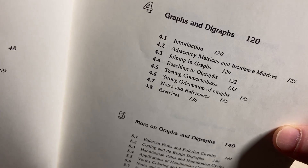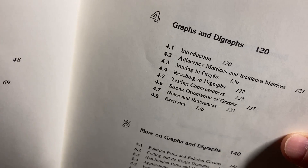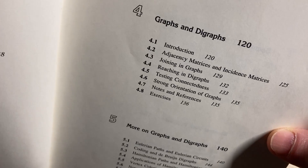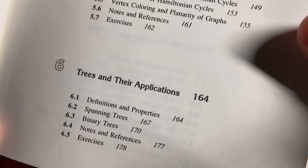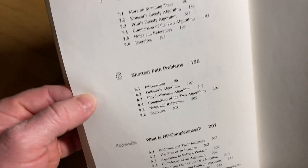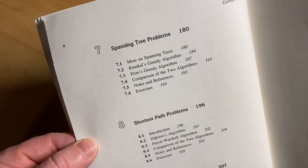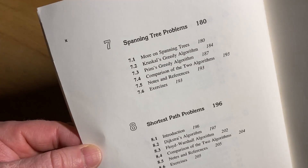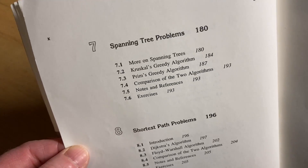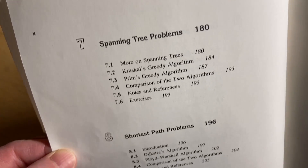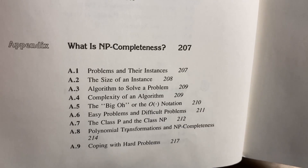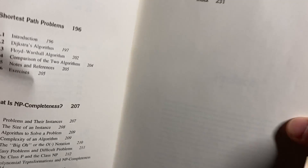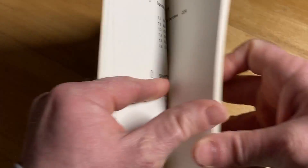You also get some graph theory: graphs and digraphs, and trees and their applications. Computer science majors are typically required to take a discrete math class, so if you're thinking about going to college for computer science, this is something you can have now and learn ahead of time. Topics also include spanning tree problems, shortest path problems, and NP completeness.